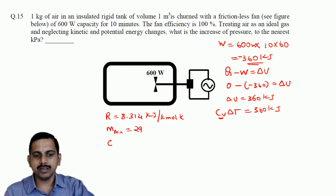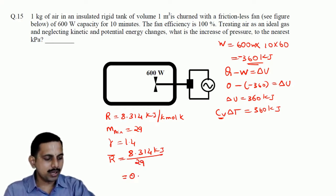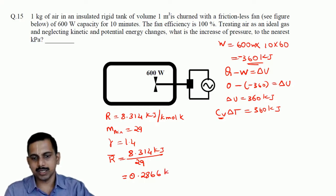They have given gamma as 1.4. From these values we can find Cv. Before that, we will find the characteristic gas constant. The characteristic gas constant is 8.314 kJ divided by molecular weight 29, which gives 0.2866 kJ/(kg·K).